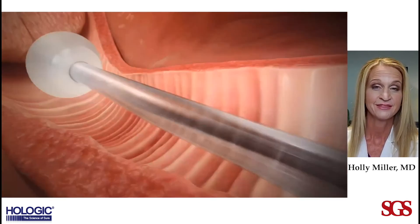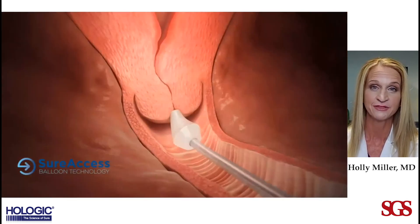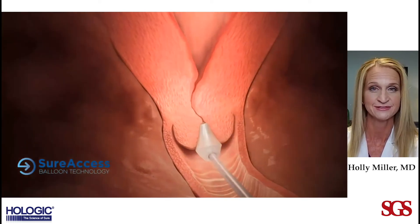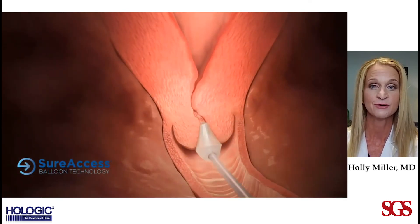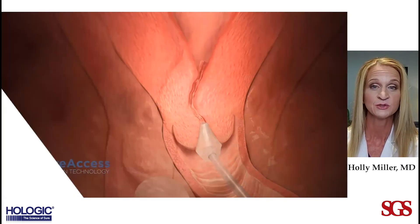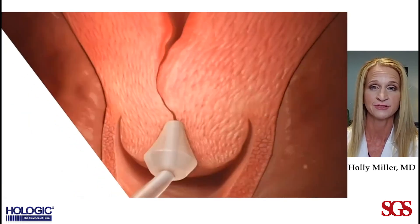The acorn tip of the dilator catheter is placed up against the cervix. The membrane is then rolled into the cervix by pushing the proximal and distal handles of the dilator catheter together.